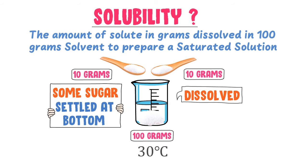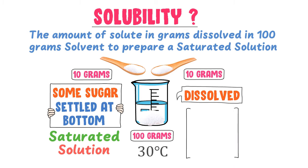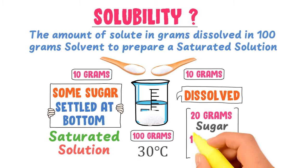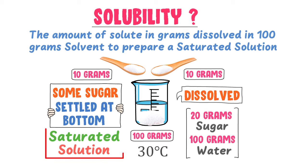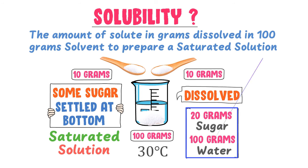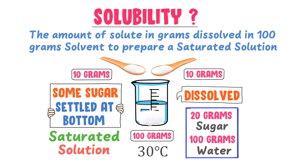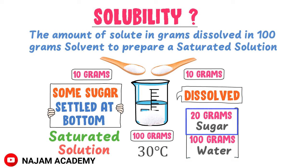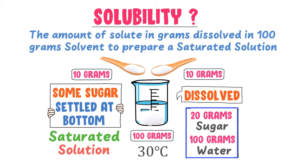This means we have prepared a saturated solution of sugar and water at 30 degrees centigrade. I dissolved 20 grams of sugar in 100 grams of water to get a saturated solution. Saturated solution means that 100 grams of water can only dissolve 20 grams of sugar at 30 degrees centigrade; the extra sugar would settle at the bottom. Thus, the solubility of sugar is 20 grams per 100 grams of water at 30 degrees centigrade.